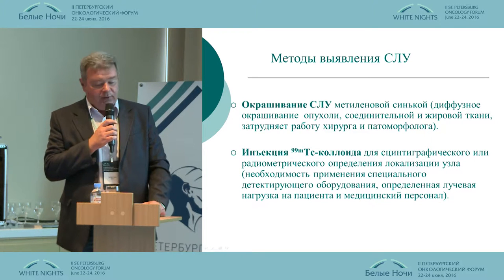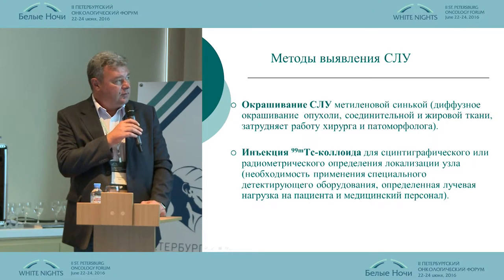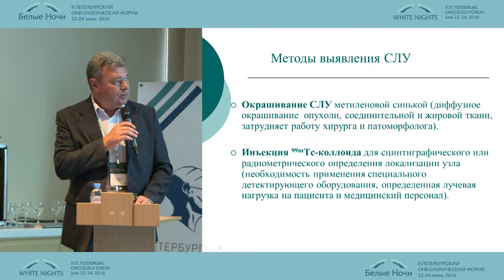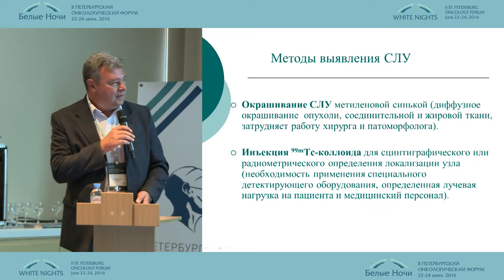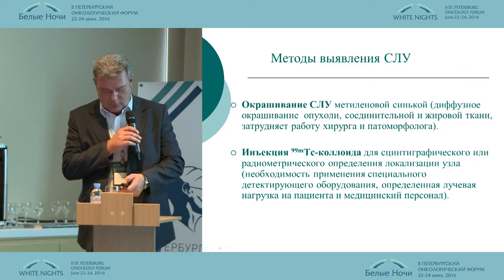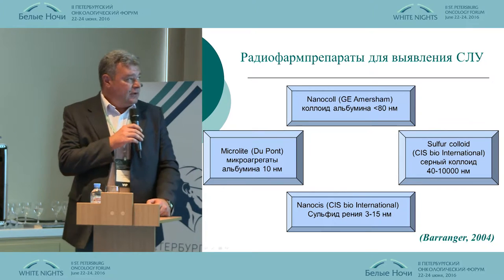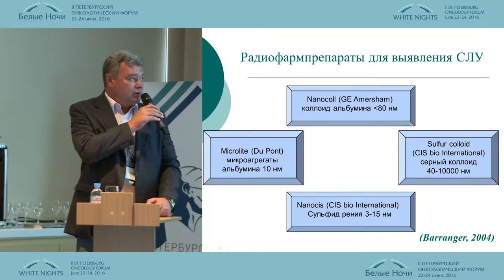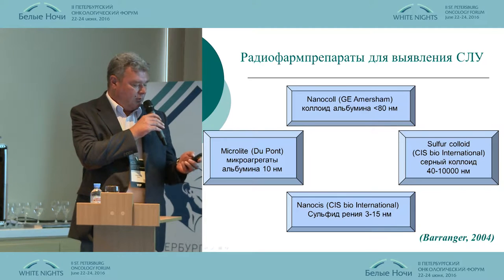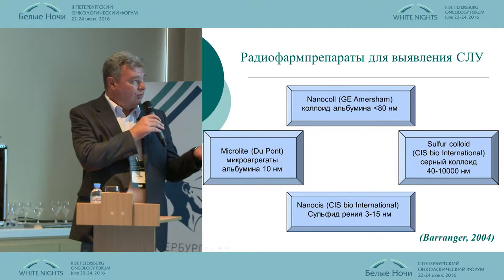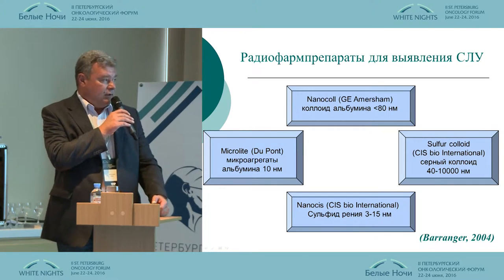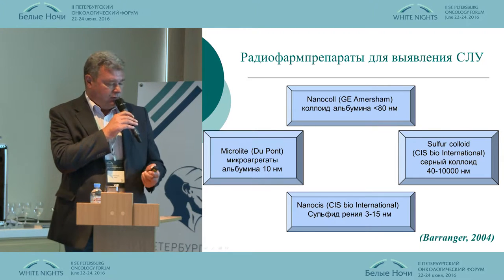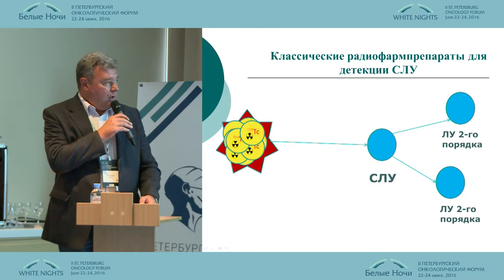There are two methods of identifying the Sentinel Node. They use fluorescent media or colloid injection for dyeing. Nowadays, there are several preparations used for identifying sentinel lymph nodes. The best is nanocoil, having the best molecular diameter of around 80 nanometers. All the rest are either smaller or larger, which decreases efficacy.